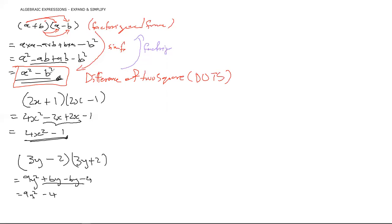This is the Difference of Two Squares because one term is a perfect square, the other is a perfect square, and the sign between them is a minus. If you don't see it immediately, note that 4 can be written as 2², and using laws of exponents that works out. Similarly, 9 is 3².